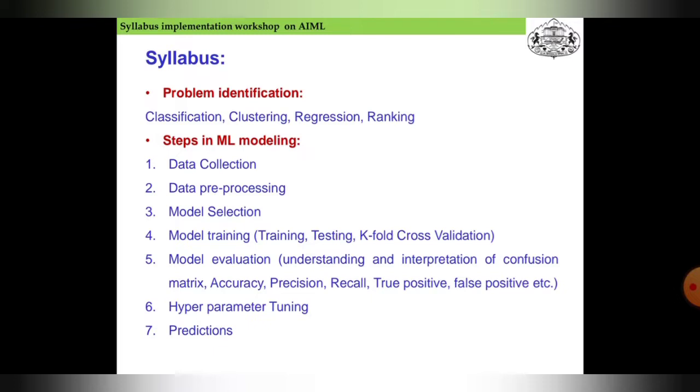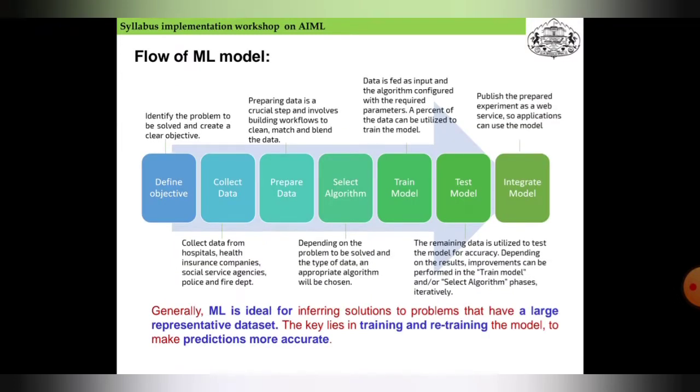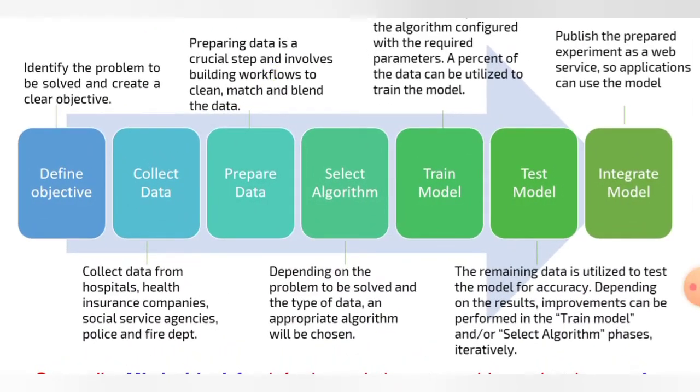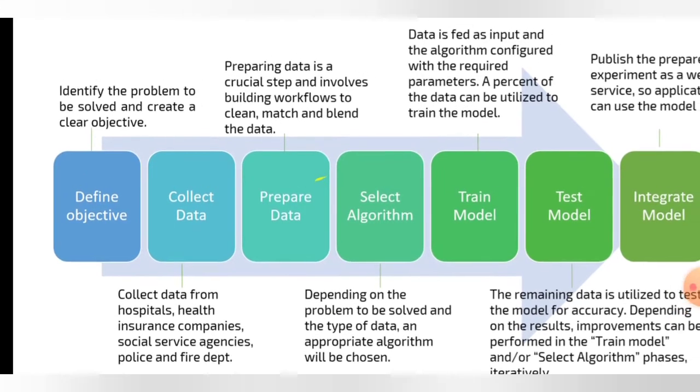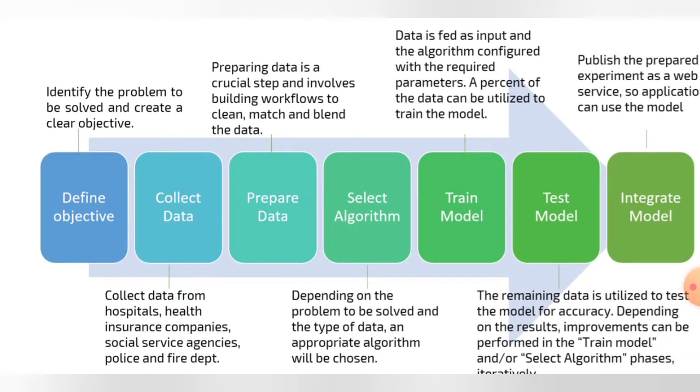We will go step by step through the flow of the machine learning model. The first step is to identify the problem to be solved and create a clear objective, called defining the objective.